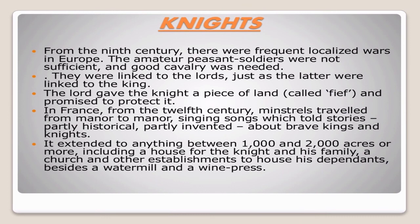Talking about the knights: from the 9th century, there were frequent localized wars in Europe. The amateur peasant soldiers were not sufficient and good cavalry was needed. They were linked to the lords just as the latter were linked to the king. The lord gave the knight a piece of land called a fief and promised to protect it. From the 12th century in France, minstrels traveled from manor to manor singing songs which told stories — partly historical, partly invented — about brave deeds and knights. The fief extended to anything between 1,000 to 2,000 acres or more, including a house for the knight and his family and a church or establishment for his dependents.